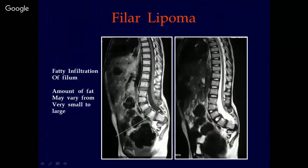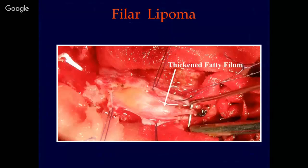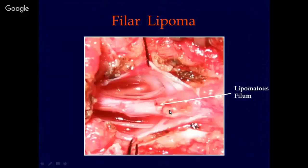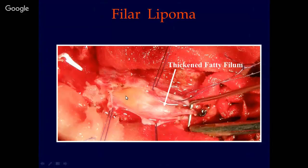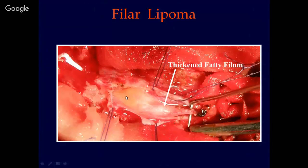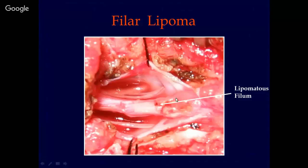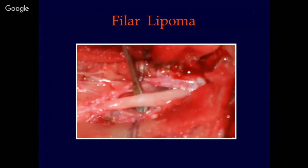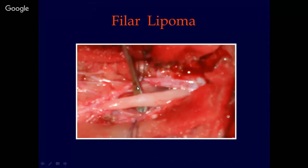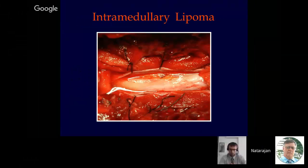This is a filar lipoma. We use the term filar lipoma when there is fatty infiltration of the filum. The amount of fat in the filum may vary from very small to large. In fact, this is one of the largest filar lipomas I have encountered. Intramedullary lipomas are included for completeness purposes; only one such case was encountered in the entire series.